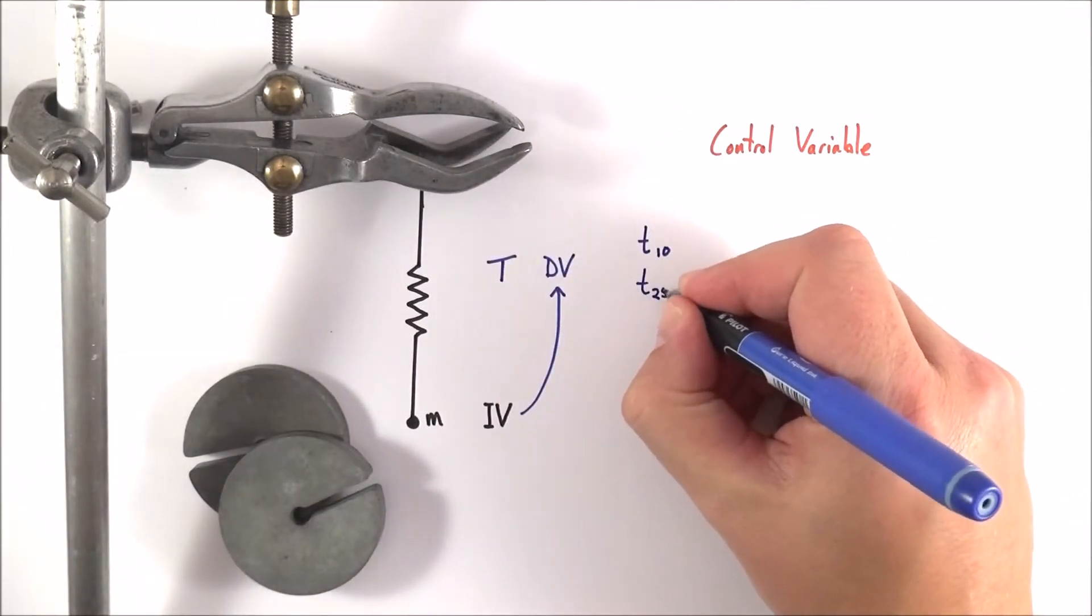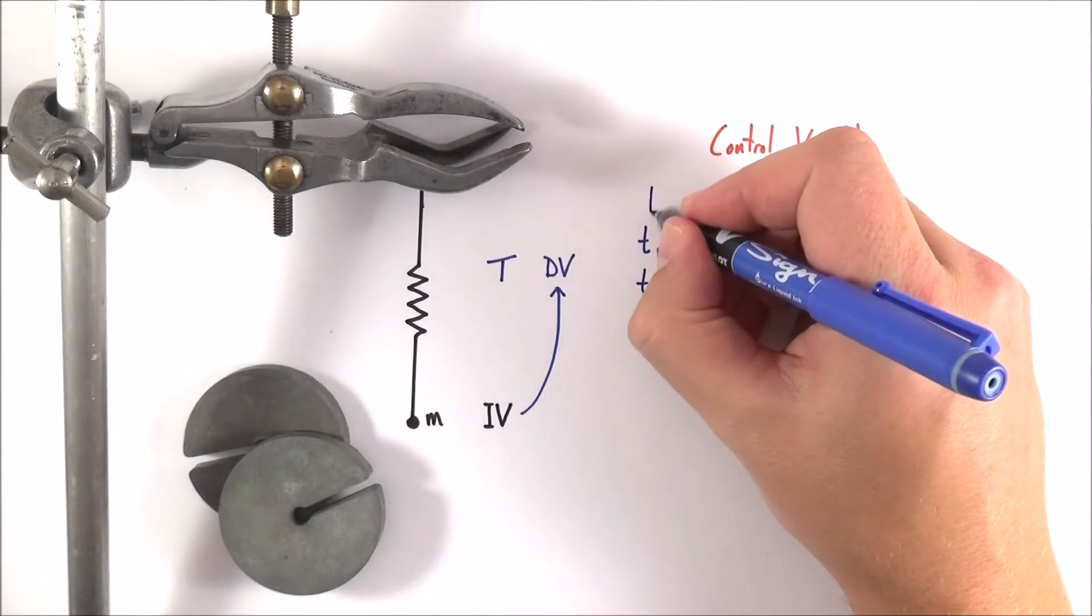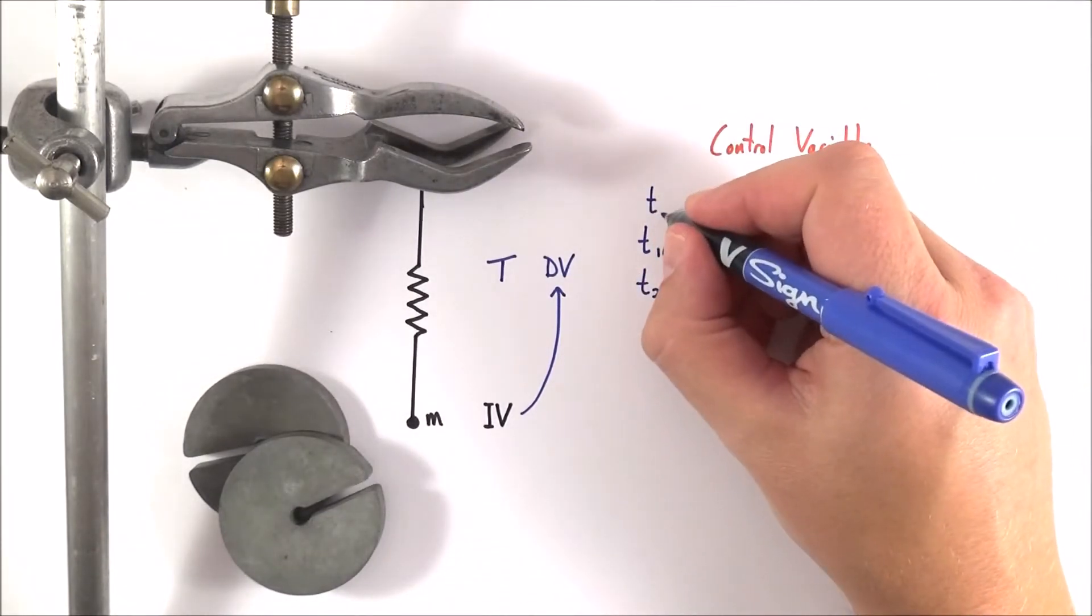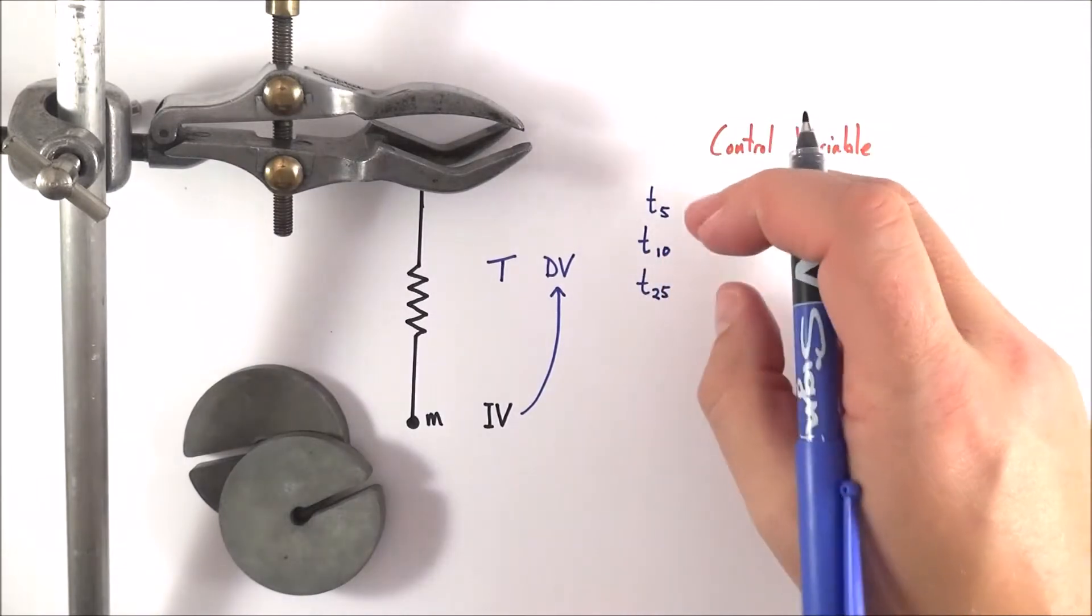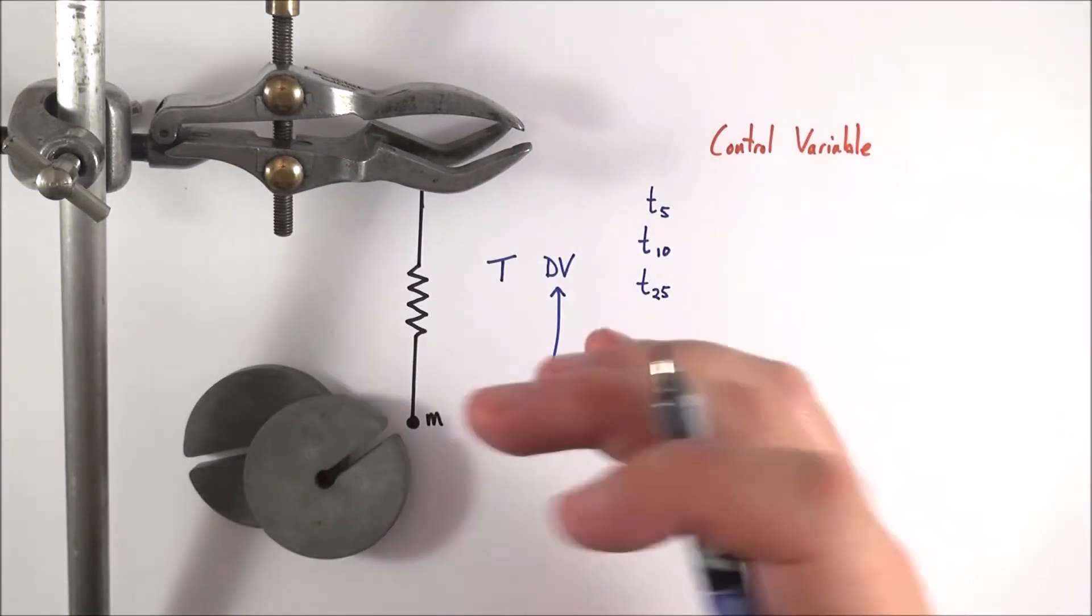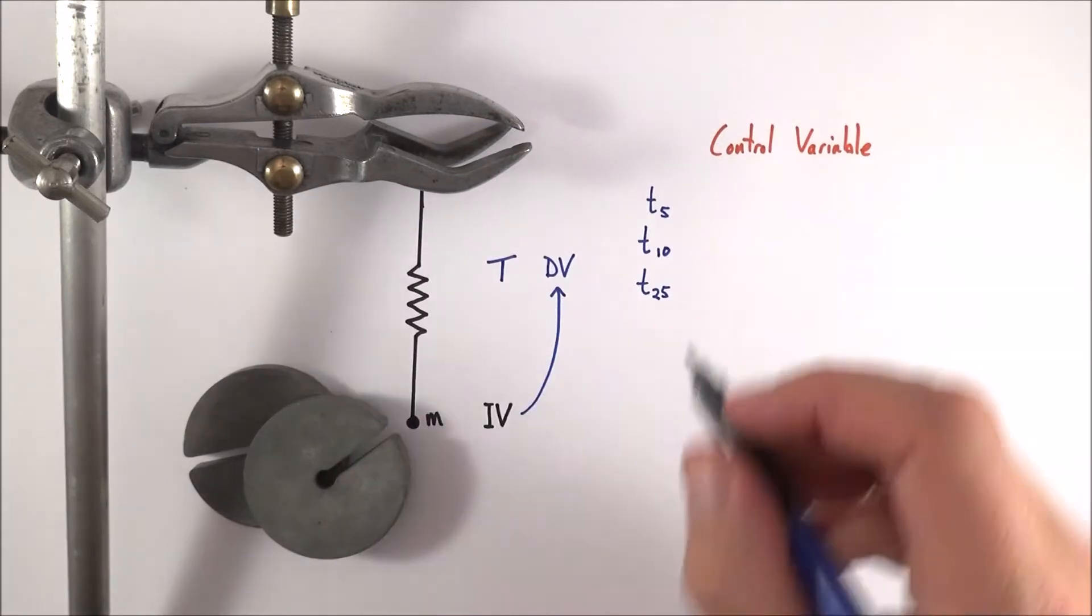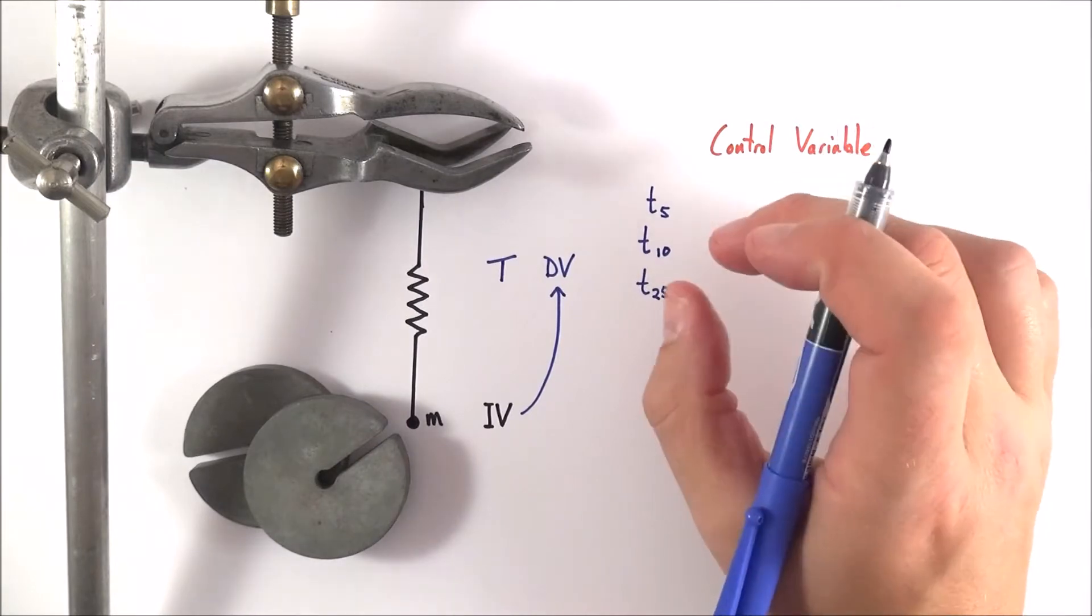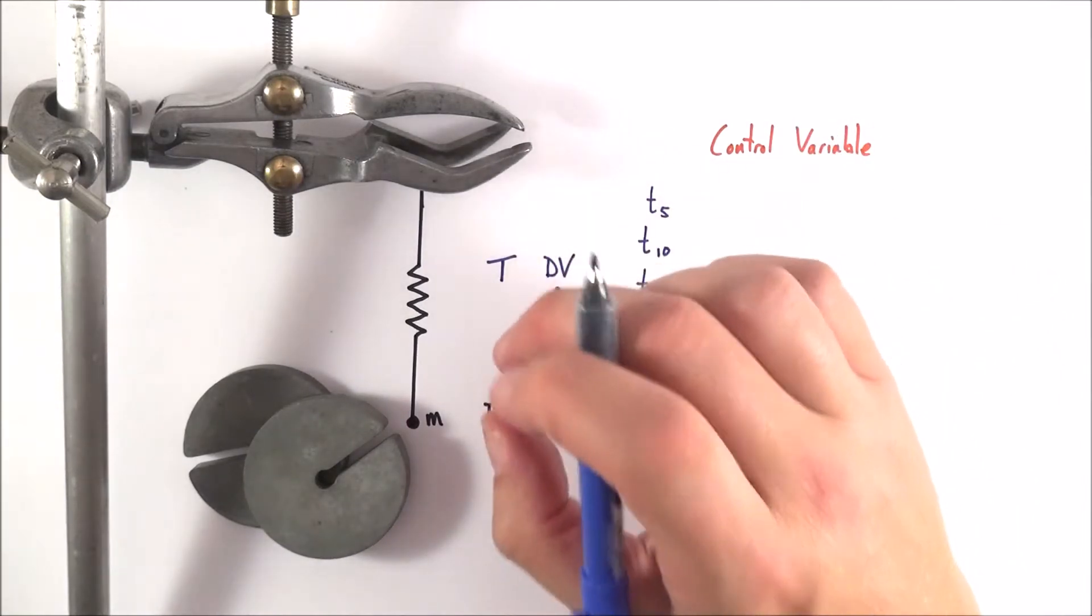You wouldn't then the next time do it for 25 oscillations, or maybe just the time for 5. Because the longer this is oscillating up and down the greater the effect of the damping due to the air and other friction. So what you want to do is you want to make sure that this is something which is the same each time. If you control that you've got a better chance of getting good results.